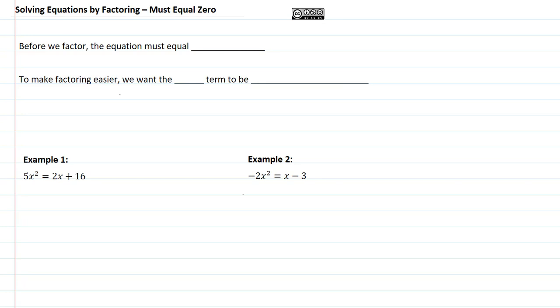Solving equations by factoring must equal zero. Before we factor, the equation must equal zero. If it's not, we need to get everything on one side and zero on the other. To make factoring easier, we want the x squared term, or whatever variable is squared, to be positive.